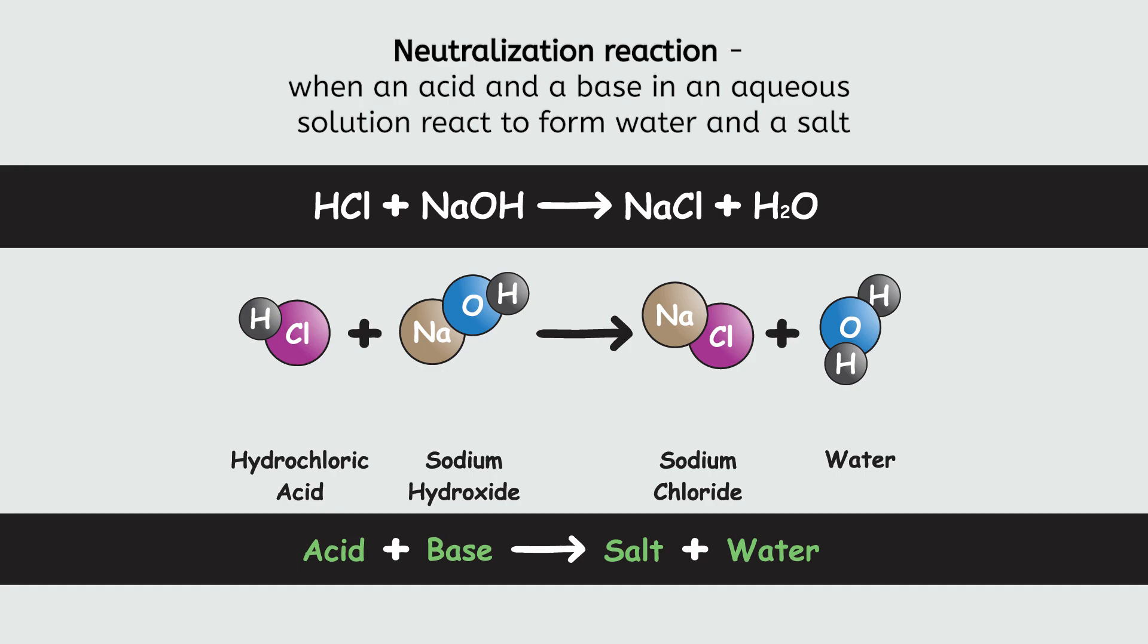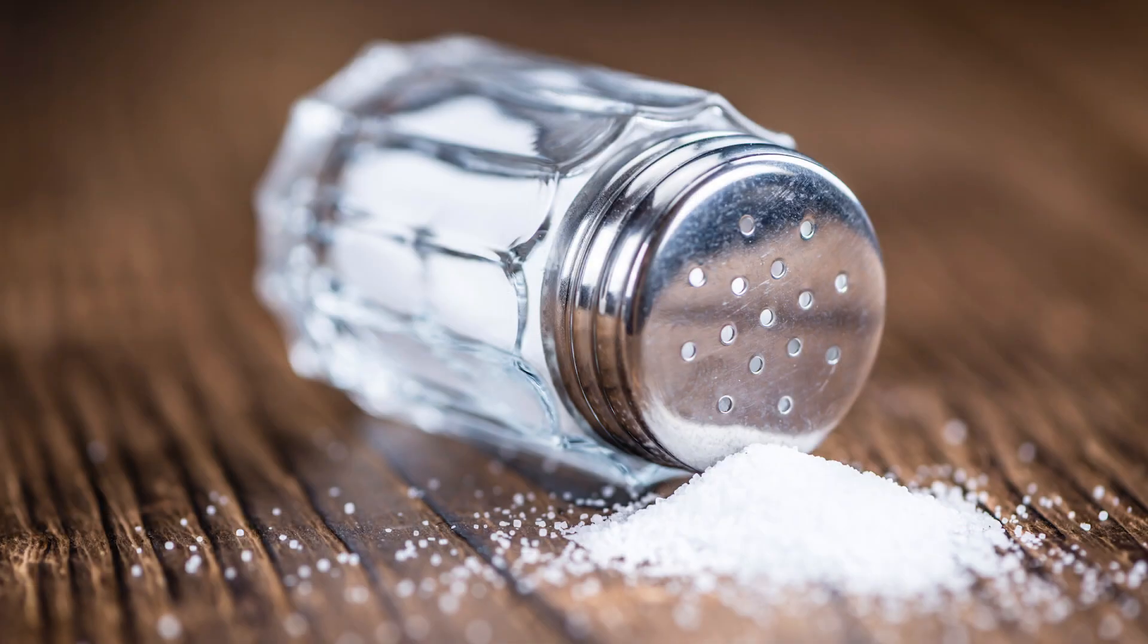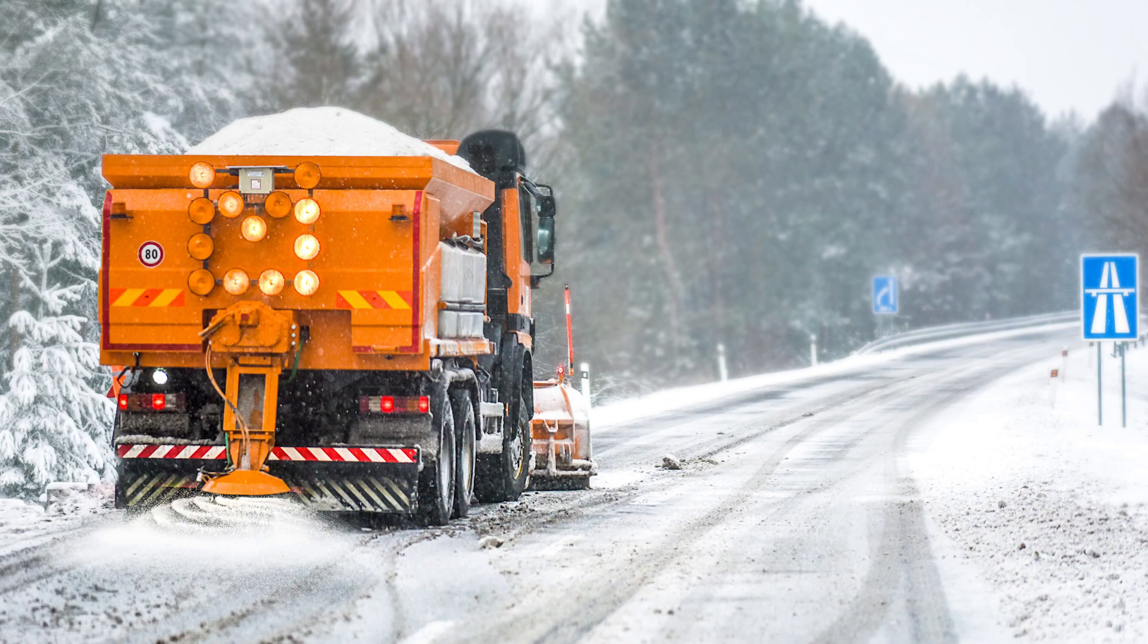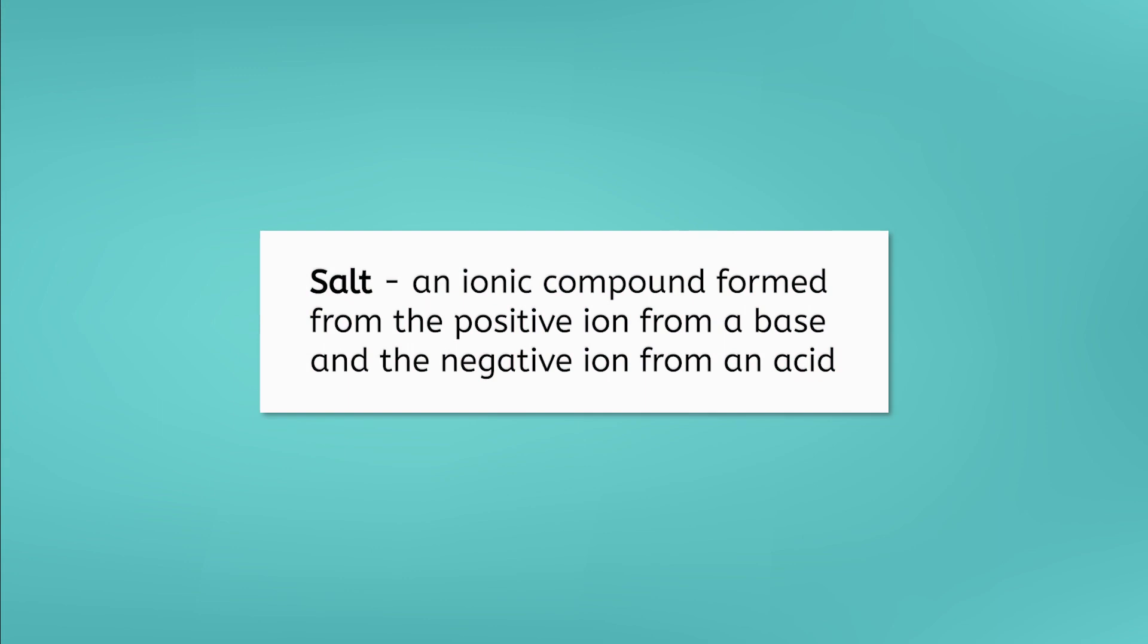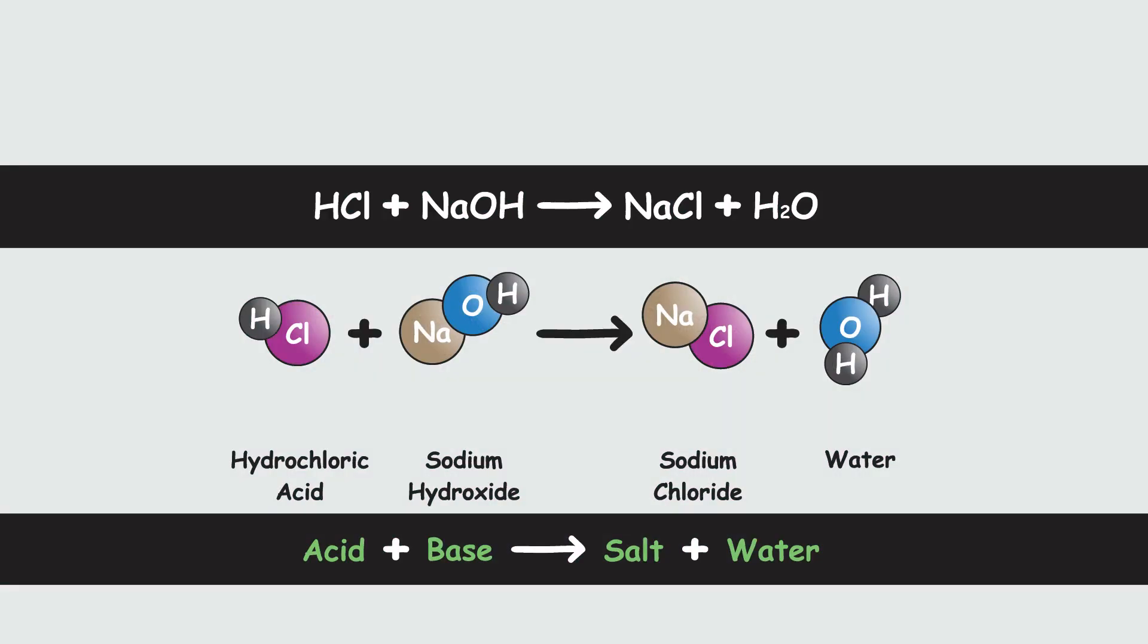When you hear the word salt, you probably think of table salt or the salt you put on ice on the road in the winter. But the chemical definition of a salt is an ionic compound formed from the positive ion from a base and the negative ion from an acid. If you look back at the neutralization reaction we looked at a few minutes ago, the Na⁺ from the base forms an ionic compound with the Cl⁻ from the acid to form sodium chloride or NaCl, which is table salt.